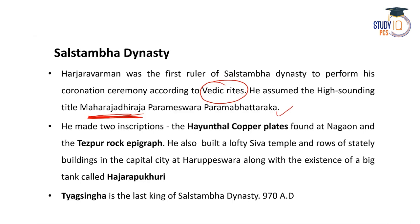Hazaravarman made two inscriptions: the Hayanthal copper plate found at Nagaon, and the Tezpur rock epigraph. He also built a lofty Shiva temple and rows of stately buildings in the capital city Haruppeswara, that is Tezpur. He caused a big tank called Hazara Pukhuri to be dug, which still exists in Tezpur and is named after him. Note: Hazaravarman belonged to the Salastambha dynasty, not the Varman dynasty, despite the similar surname.